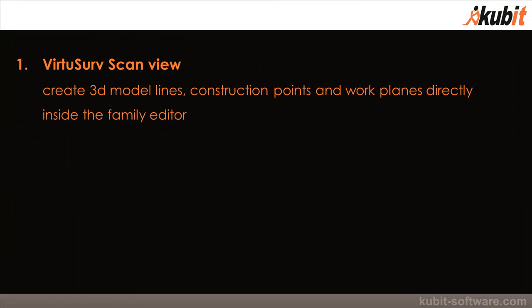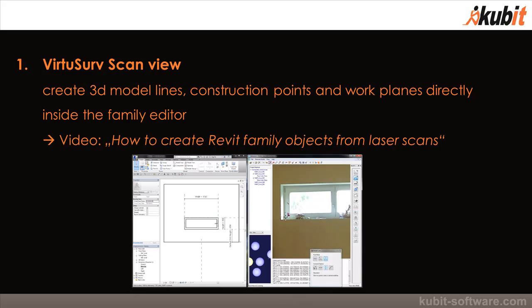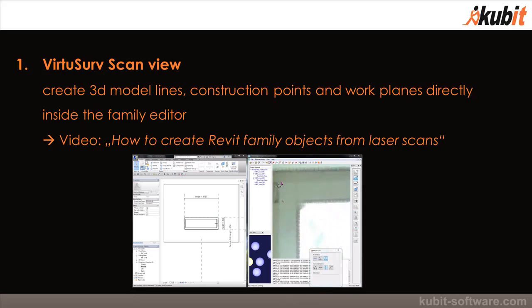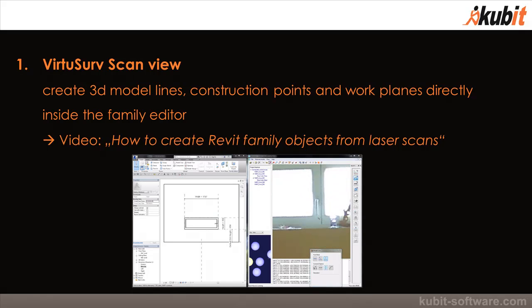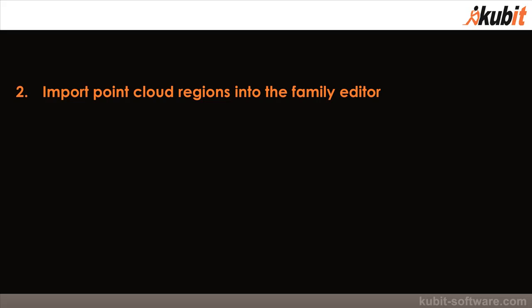The first option is using the virtual surface scan view to create 3D model lines, construction points, and work planes directly inside the family editor. This is shown in the how-to video 'Creating Revit family objects from laser scan data' on the Qubit channel. In this video I want to show you the second option: importing point cloud regions directly into the family editor.